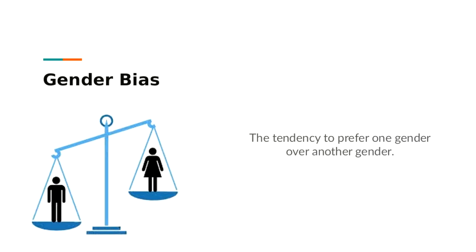Gender bias is the tendency to prefer one gender over another. This can appear in many forms — males preferring to work with males, or women preferring to work with women. A way to avoid this is blind screenings when reviewing applications, just as with ageism, so you focus on the candidate's skills and background rather than their gender.